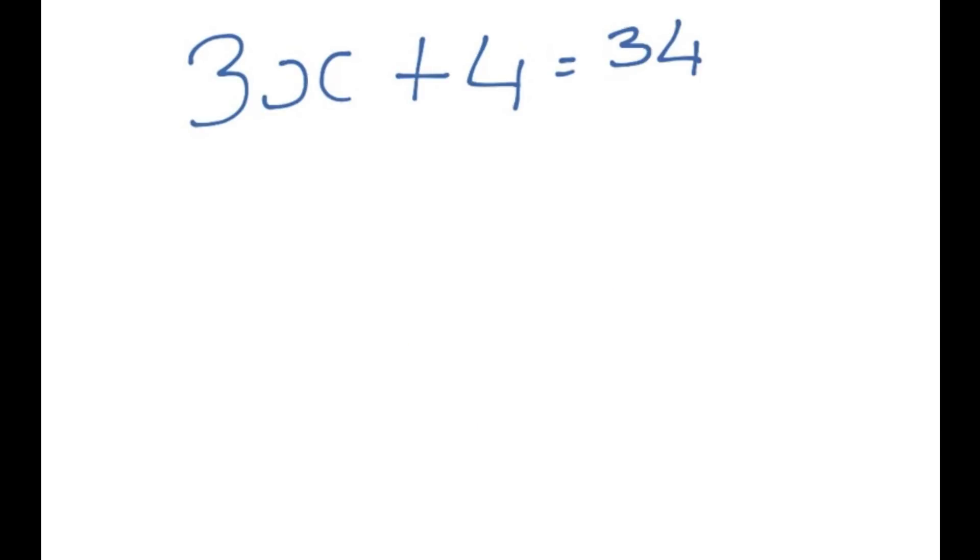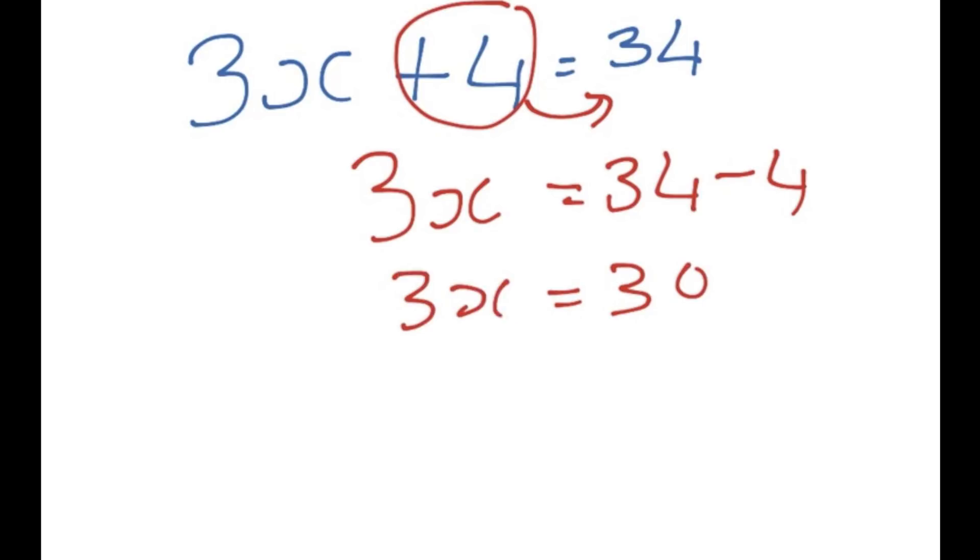Here's another one. We have 3x plus 4 is equal to 34. And now what we would do is we'd move the plus 4 to the right hand side. And we'd end up with 34 minus 4. So 34 minus 4 is just 30. And then we have 3x on the left. x is therefore 30 divided by 3. And the answer would give us 10.